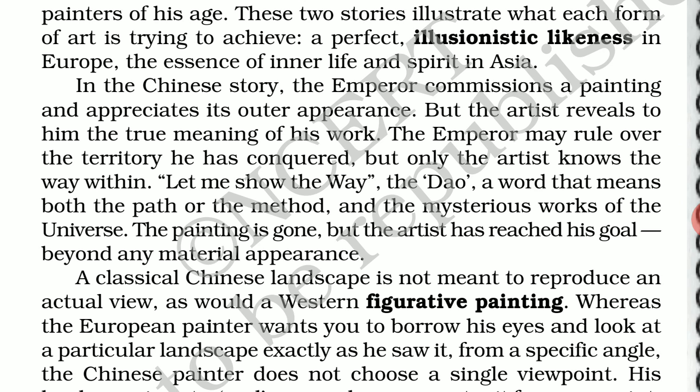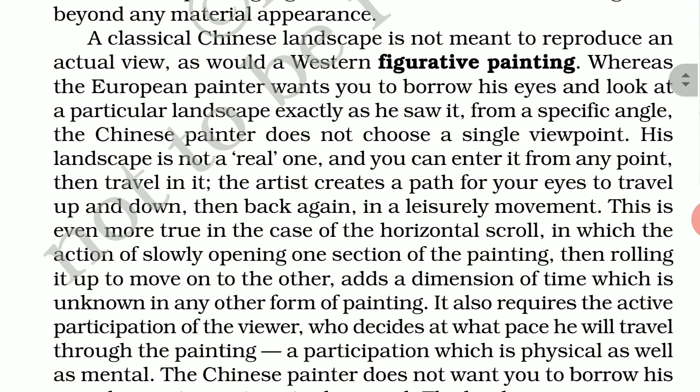The artist reveals the true meaning of his work to the emperor who rules over his territory but does not know the way within. This is a spiritual story. The emperor only saw the outer appearance of the wall painting. The Tao means something that has both paths, which is what the artist did. As the painting was gone after the artist reached the cave, some motive was fulfilled — that work is beyond material appearance, beyond materialistic words.